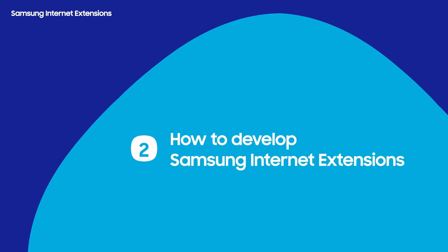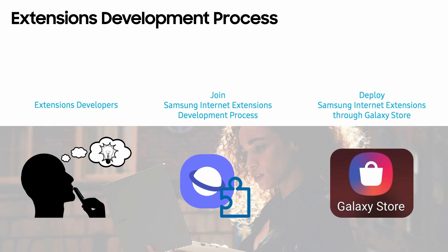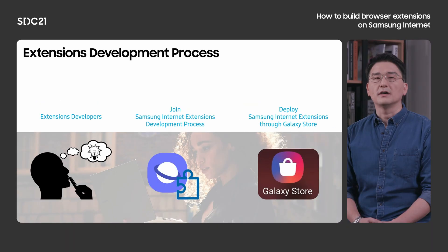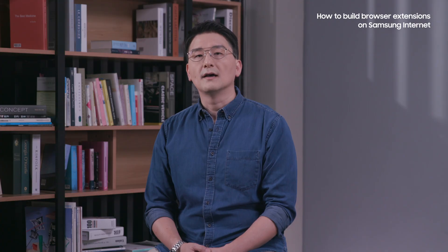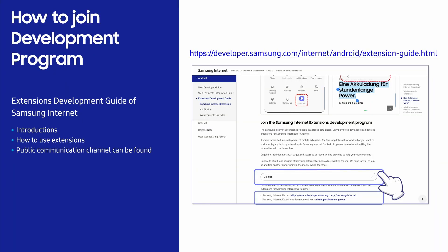Now let's see how to develop your extensions for Samsung Internet. The whole process is simple. If you are interested in extension development for Samsung Internet, you can contact us through the Samsung Developers Portal and join our Samsung Internet Extensions development program. Then, after registering to the Galaxy Store as a seller, you can upload your developed extensions for deployment. In the Samsung Internet section within the Samsung Developers Portal, you can find the Extension Development Guide, or you can load the page directly with the corresponding URL.